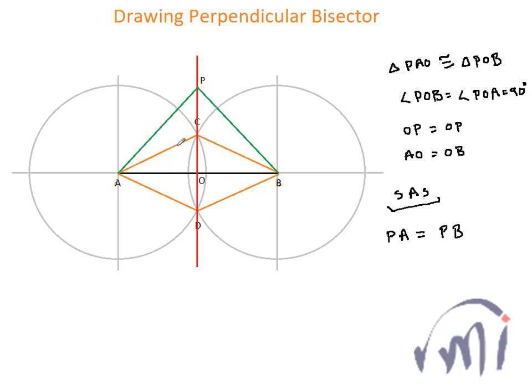Or you can say the triangle PAB will always be an isosceles triangle. And for any isosceles triangle, the median is also the perpendicular bisector.